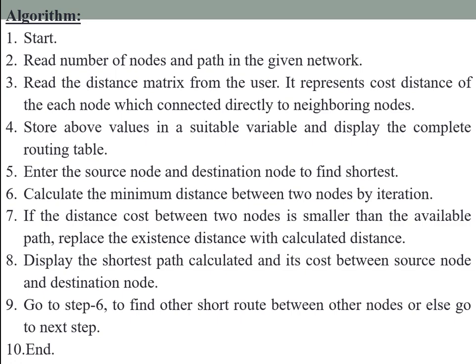Once we have the information of neighboring node costs and distances, we store the values in suitable variables and display the complete routing table. Then we enter the source node and destination node to find the shortest distance. Calculating the minimum distance between two nodes is done by an iteration method. If the distance cost between two nodes is smaller than the existing path, we replace the existing distance with the calculated distance.